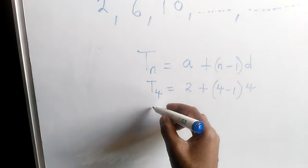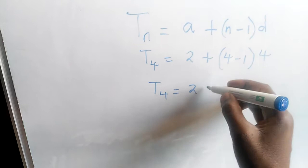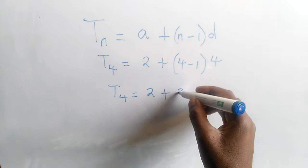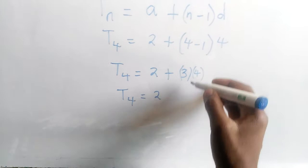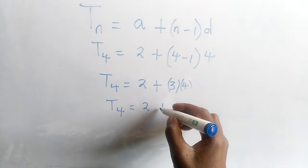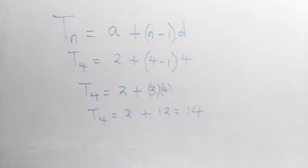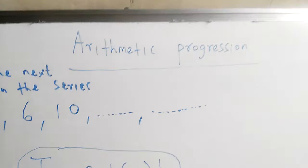And so, the term that I want, term number 4, will equal 2 plus (4 take away 1 is 3), and that will multiply our 4. Remember, your order of operations: we start by multiplying. 3 times 4 is 12. That's when we can add. Therefore, term number 4 is equal to 14. This formula gives us the term we want in an arithmetic progression.